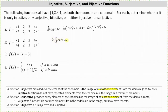Bijective functions are functions where every element in the codomain is the image of exactly one element from the domain, which is what we have here. For number three and number four, we will go ahead and determine the two-line notation for the given functions. It's much easier to determine the type of function when we have the function in two-line notation.